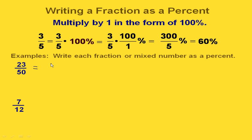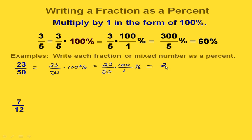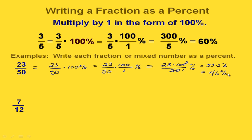So if we start out with 23 fiftieths, we're going to multiply this by 100%. So we have 23 fiftieths times 100 over 1, and we keep our percent symbol. What we're really doing is dividing the numerator by the denominator, but here we can just do some canceling — we have 100 on top and 50 on the bottom, so we cancel a 50 out of both, leaving a 2 on top. That gives us 23 times 2%, which is 46%.